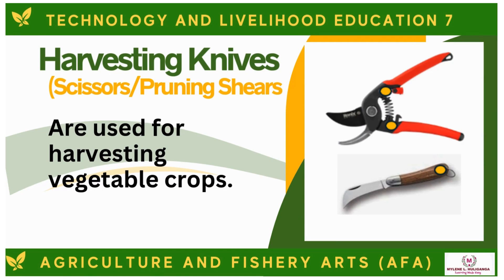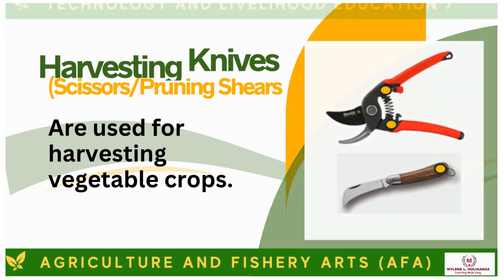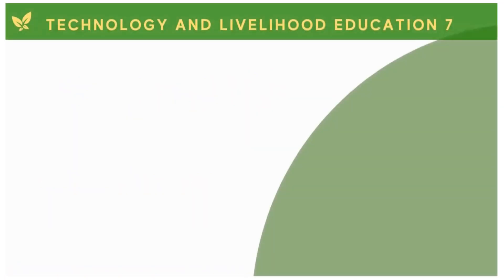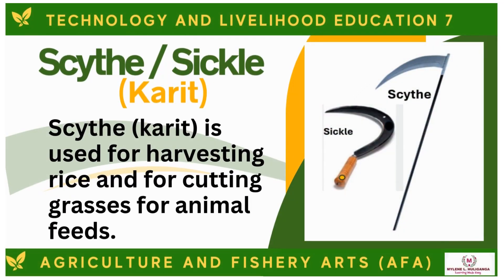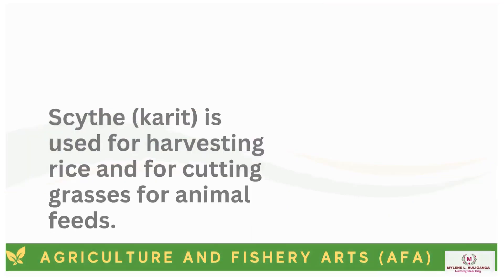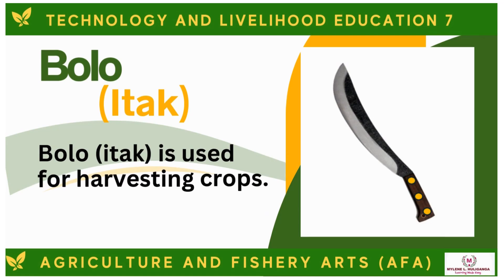Harvesting Knives or Pruning Shears are used for harvesting vegetable crops. The Scythe or Sickle is used for harvesting rice and for cutting grasses for animal feeds. The Bolo or Etuk is used for harvesting crops.